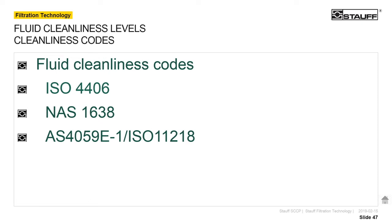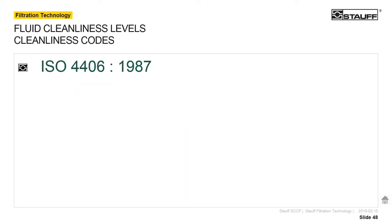Cleanliness codes — there are three major ways to express cleanliness in a hydraulic fluid. The first is ISO 4406 — the most common. The next is NAS 1638, very common in military and oil and gas industries. The last is AS4059, or ISO 11218, which is an upgrade to the old NAS code. An ISO code would look something like 19/16/5 — though the last digit here is adjusted for the presentation; in the real world it might be something like 19/16/13.